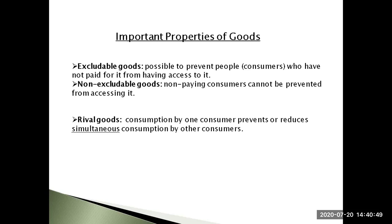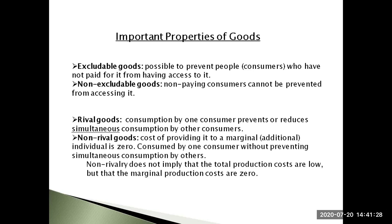We can also consider the rivalry spectrum. A good is said to be rivalrous if its consumption by one consumer prevents simultaneous consumption by other consumers, or if consumption by one party reduces the ability of another party to consume it. Note the term 'simultaneous' — some rival goods can still be shared through time; these are called durable rival goods. For example, when I read a book you may read it later but cannot read it simultaneously. Eatables and other such items are called non-durable rival goods, and most tangible goods are rival goods.